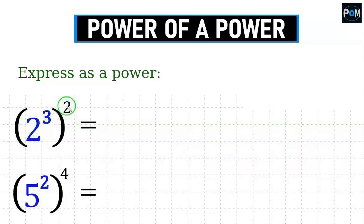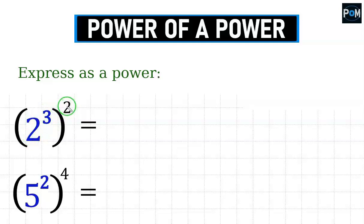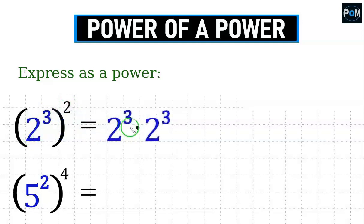How does it work? What does it mean to raise something to the power of 2? That means what's in the bracket — in this case, I need to write it twice and multiply it. This is how the operation is written down.